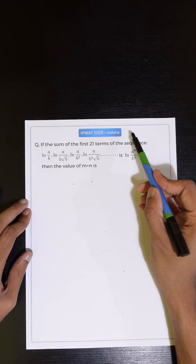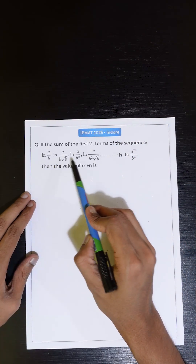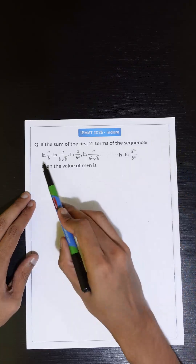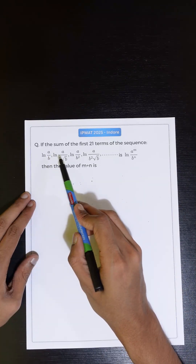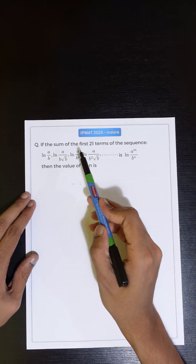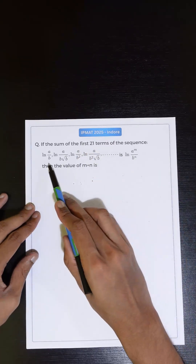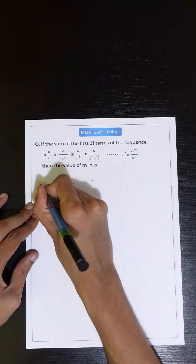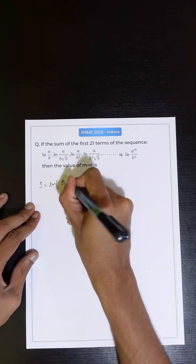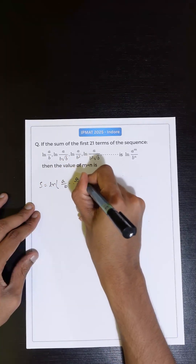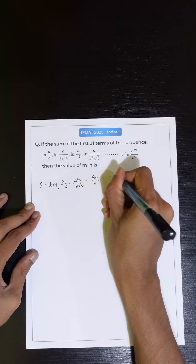Hi guys, this is a previous year IPMAT question. In this question we need to find the sum of all these terms. Basically all the terms are having ln, which means a logarithm. Now sum of logarithms is basically logarithm as a whole, and inside we will take a product of all these terms. So essentially I can write this sum as ln of (a/b) times (a/b)^(√b) times (a/b)^(b²) and so on.